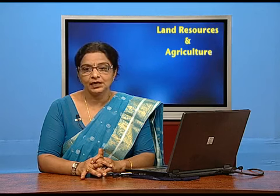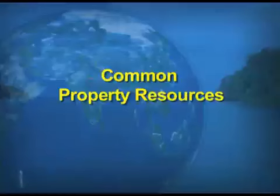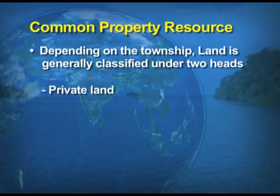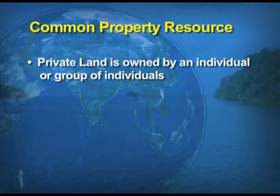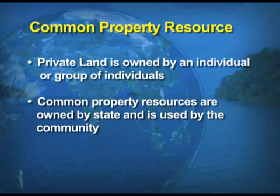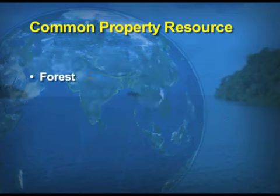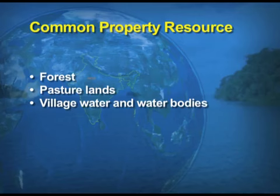Although the contribution of agriculture reduces with time due to changing activities, the pressure on land remains. Resources are divided under two heads: private and common property resources. Private resources are owned by an individual or group of individuals. Common property resources are owned by the state and used by the community — examples include forest land, pasture land, village water, and water bodies.